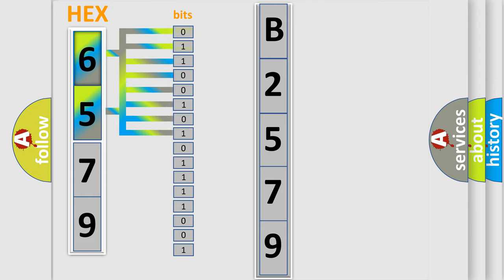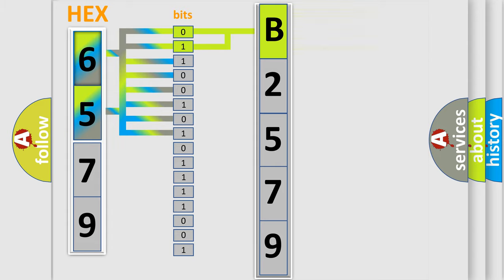The bit has two logical states: zero, which is the low level, and one, which is the high level. By combining the first two bits, the basic character of the error code is expressed.